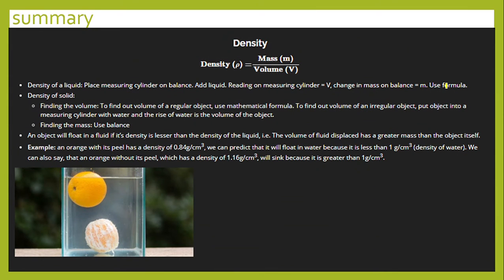In summary, density — denoted by d or ρ — equals mass divided by volume. For a liquid, place a measuring cylinder on a balance, read the volume, and measure the change in mass. For a regular solid, use mathematical volume formulas; for an irregular solid, use the displacement method in a measuring cylinder. Mass is always measured with a balance. An object floats in a fluid if its density is less than the fluid's, and sinks if it is greater.